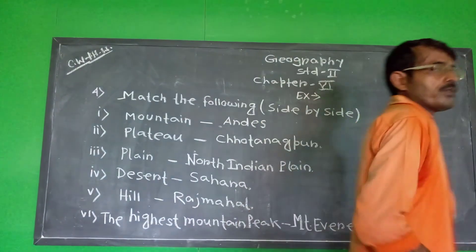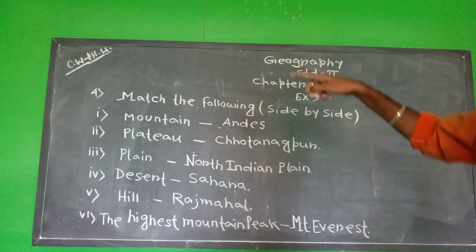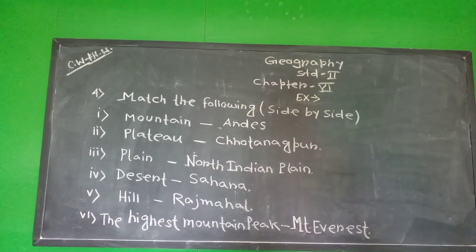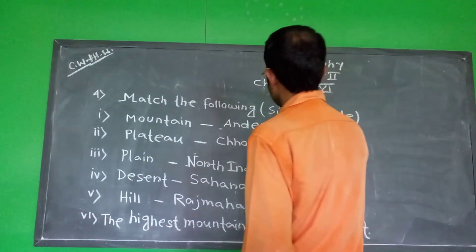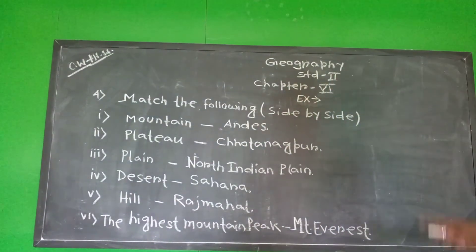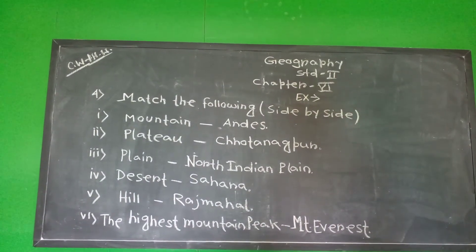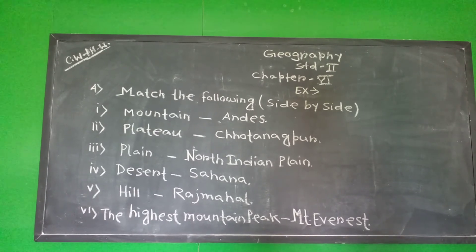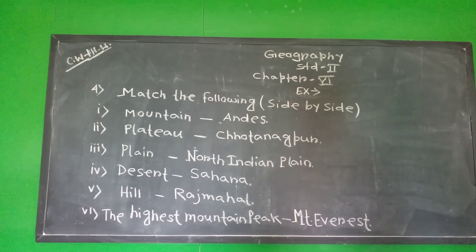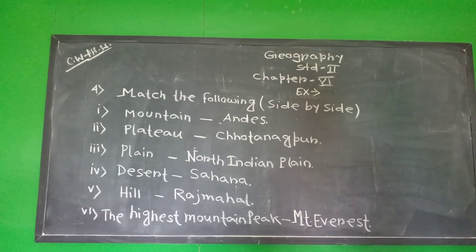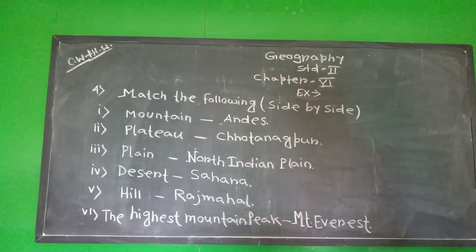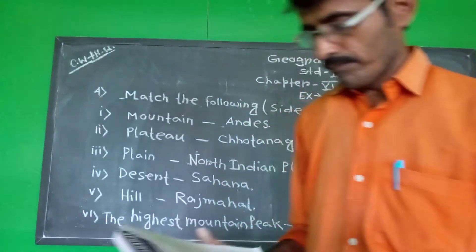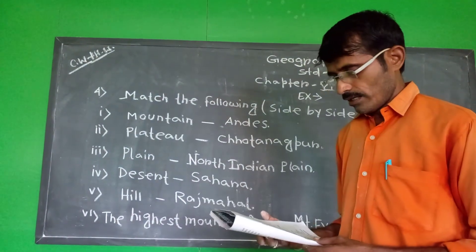Let's follow the board and write the right answers. Mountain — Andes. Plain — North Indian Plain. Desert — Sahara. Hill — Radmohan. The highest mountain peak — Mount Everest. Okay, then you will write the answer.